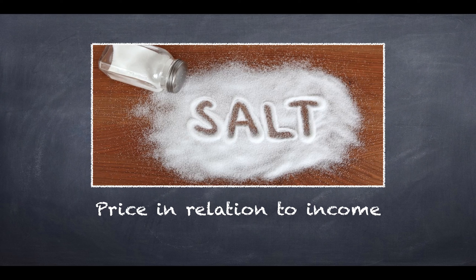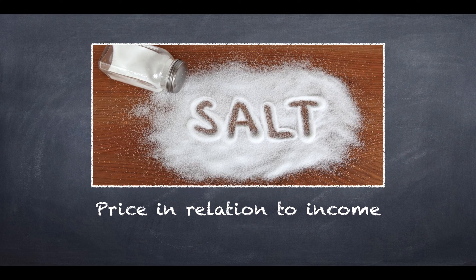The second factor is the price of the product in relation to income. I frequently give the example of salt in class because salt is very cheap. Most people wouldn't care if the price of salt went up because it makes up such a small proportion of their income. If I make $5,000 a month and spend $2 on a pack of salt, a rise to $2.25 doesn't really matter — that pack might last 3 or 4 months and the $0.25 is relatively meaningless. But if you look at an item that takes up a much greater percentage of your income, like a car or a computer, people are much more sensitive to changes in price.